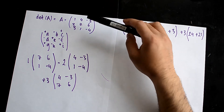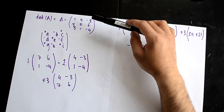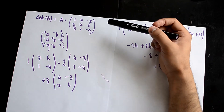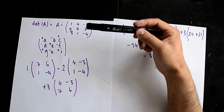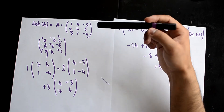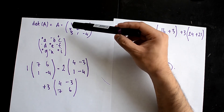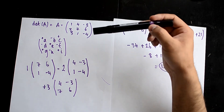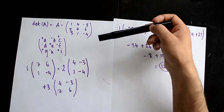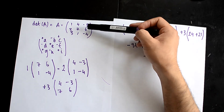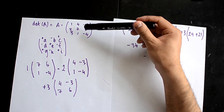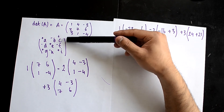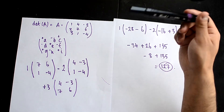Sometimes you might get zeros in your matrix — I've purposely chosen a matrix without any zeros. If you have a zero, always choose the row or column with the most zeros. But this is the hardest it will ever get for a 3x3 matrix with no zeros.